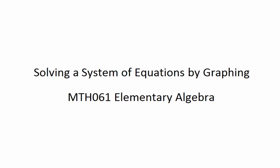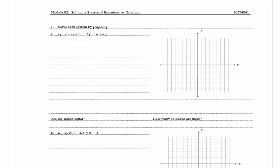In this video we're going to be solving a system of equations by graphing. In problem 1 it says solve each system by graphing. In part A we have L1: y plus 2x is equal to 3, and L2: x minus 3 is equal to y. So we want to graph both of these lines and find where they intersect.